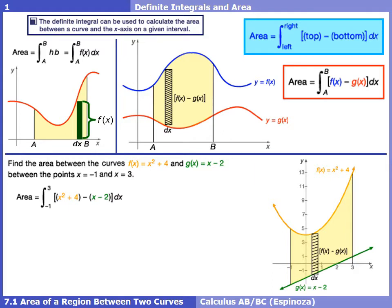The top function is whatever the top of the rectangle is touching; the bottom function is whatever the bottom is touching. We're integrating from −1 to 3. To find the distance between the two curves, take the top function, which is x² + 4, and subtract away the bottom function, which is x − 2. If you can successfully set up these integrals, it's usually not very difficult from here on out. The integrals we saw in later parts of Chapter 4 and Chapter 5 were definitely harder than this.